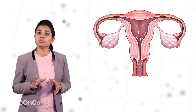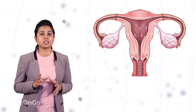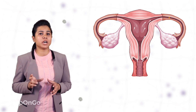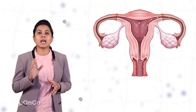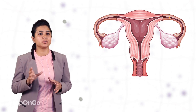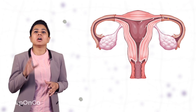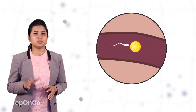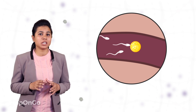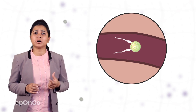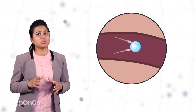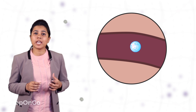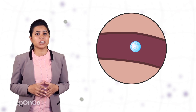The sperms are highly mobile and active, moving through the oviduct, encounter the egg and try to fuse with it. It's like millions of sperms are racing with each other and only one sperm comes out as a winner, fuses with the egg and forms the zygote.